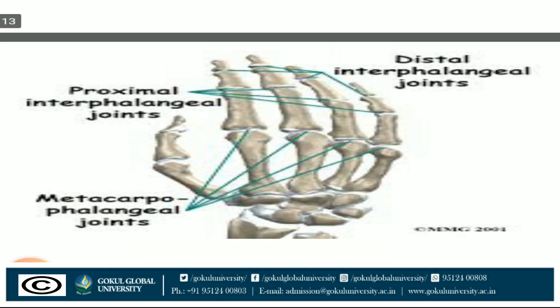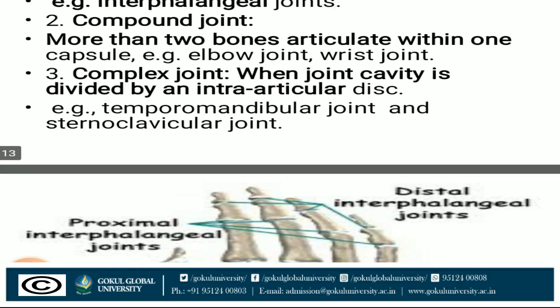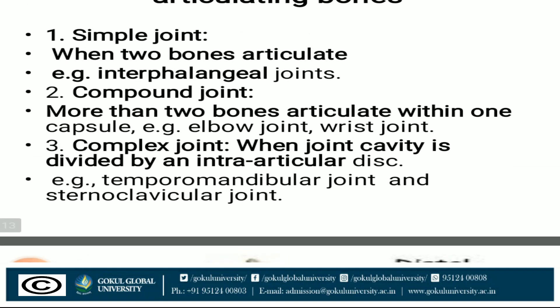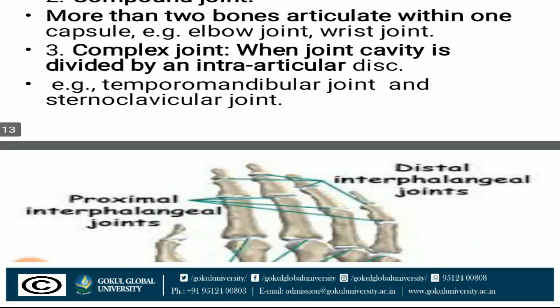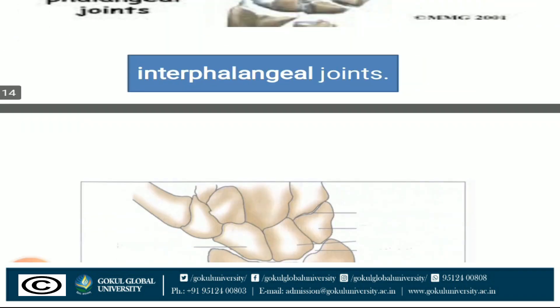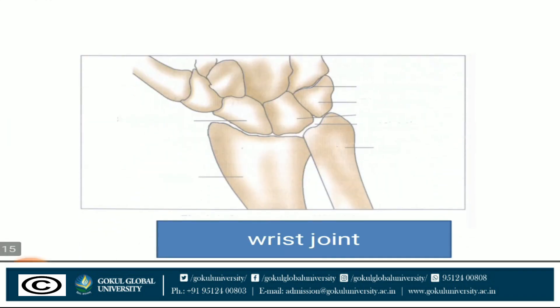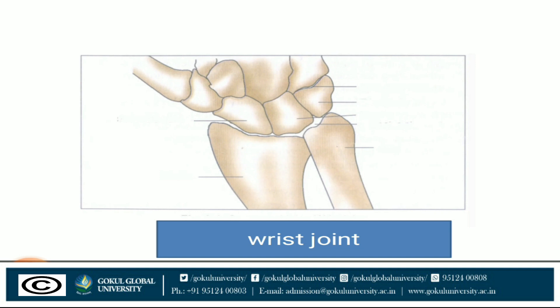A compound joint is when more than two bones articulate within one capsule. Examples include the elbow joint and wrist joint. The diagram shows a compound joint with more than two bones articulating within one joint capsule.